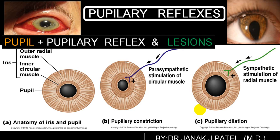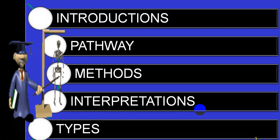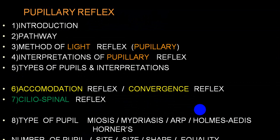The pupillary reflex involves a sensory pathway via the second cranial nerve and a motor pathway via the third cranial nerve. Before doing a pupillary reflex, we always examine the size of the pupil, compare the two sides, then go for the pupillary reflex and identify any abnormality and where the lesion is. We will cover introduction, pathway, methods, interpretations, different types of pupils, accommodation response, convergence reflex, ciliospinal reflex, and types of pupil commonly asked as short notes.